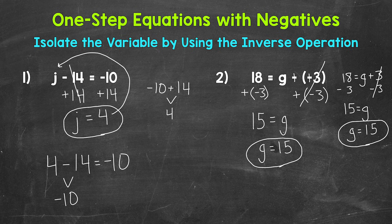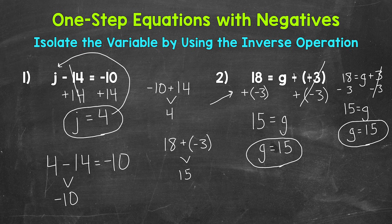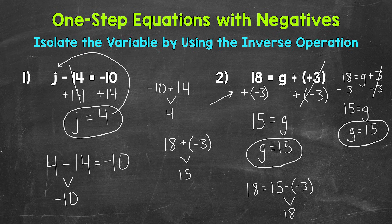We can always come to the side to show work or set up a problem differently. For example, 18 plus negative 3 horizontally: 18 plus negative 3 equals 15. Let's check that solution of 15 by plugging it in for g in the original equation: 18 equals 15 minus negative 3. Since we are subtracting a negative, we are increasing in value — 15 minus negative 3 does equal 18. We can always add the opposite: the opposite of negative 3 is positive 3, so 15 plus positive 3 gives us 18. We have the correct solution. g equals 15.